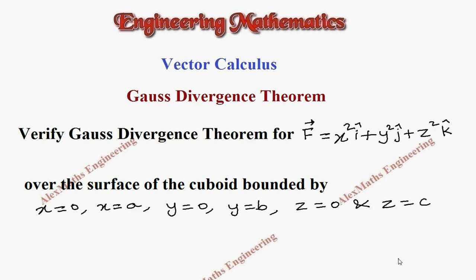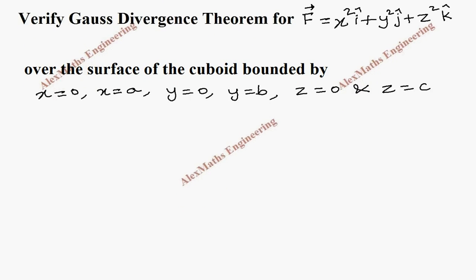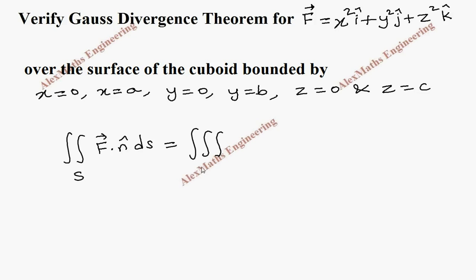Hi students, this is Alex here. In this video we are going to verify Gauss's divergence theorem for the given F vector over the surface of the cuboid bounded by the equations of the plane: x=0, x=a, y=0, y=b, z=0, and z=c. The Gauss divergence theorem states: double integral over surface S of F vector dot n-cap dS equals triple integral over volume V of del dot F vector dV.